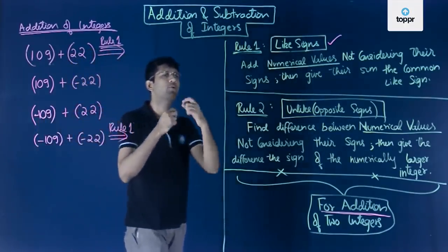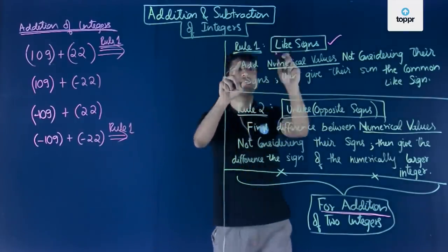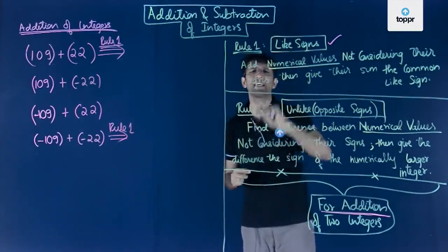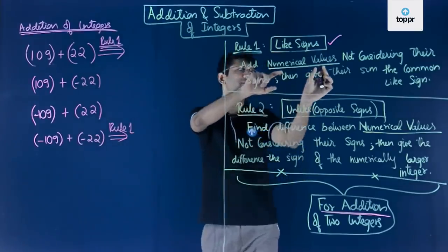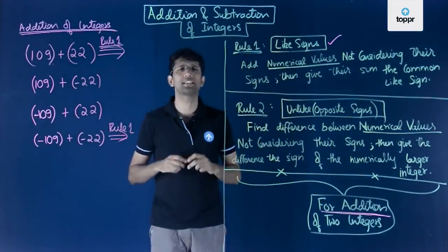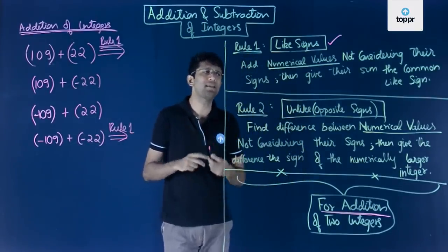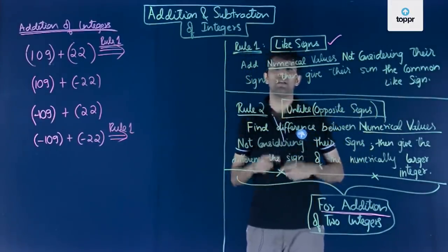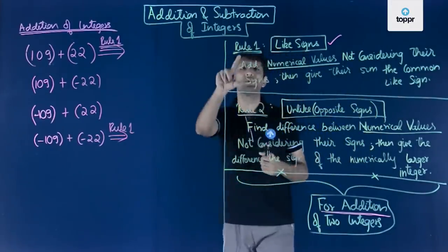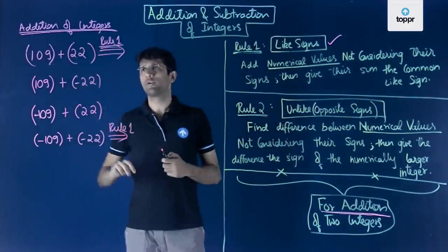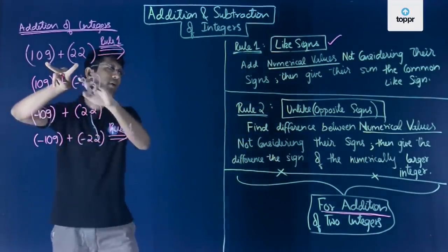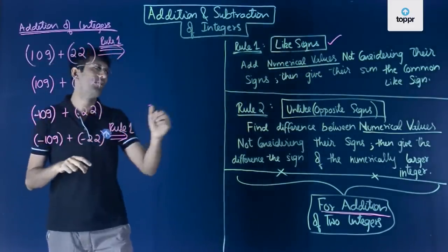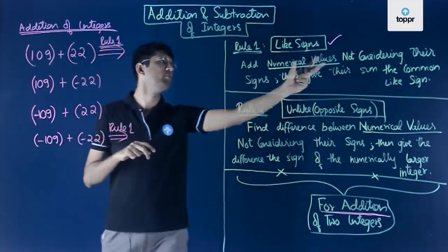Rule one tells us that whenever we add two integers with like signs, we add their numerical values not considering the signs, and then give the sum their common like sign. Let us apply this rule using an example. Because both 109 and 22 are positive, they have like signs and rule one applies.